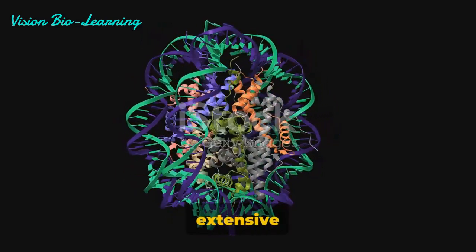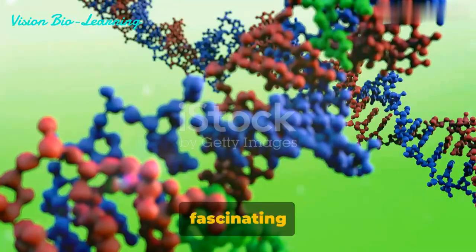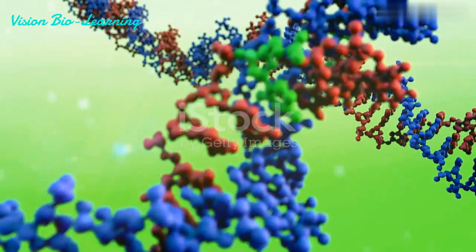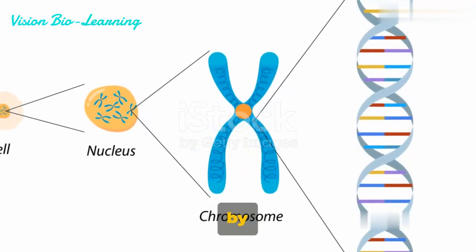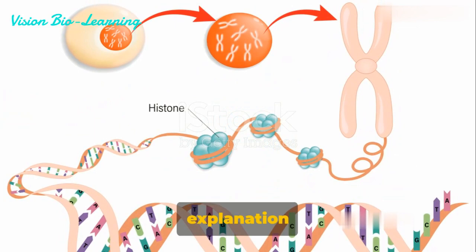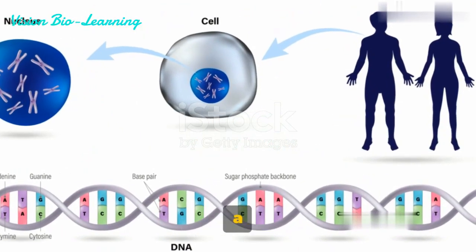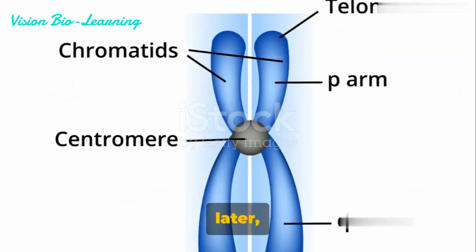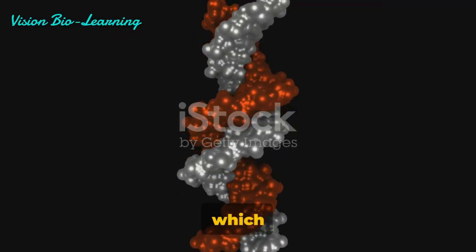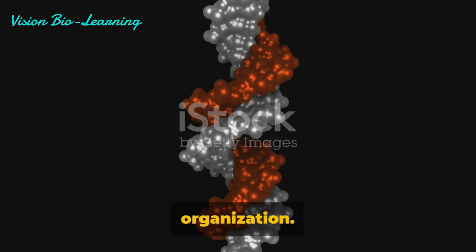Have you ever wondered how the extensive DNA strands fit into the tiny nucleus of a cell? This fascinating question prompted the creation of the nucleosome model. Proposed by Roger Kornberg in 1974, it provides a comprehensive explanation of how DNA and associated proteins are organized within a chromosome. A year later, P. Oudet and his team confirmed and christened this model, which has since become the most widely accepted explanation of chromatin organization.